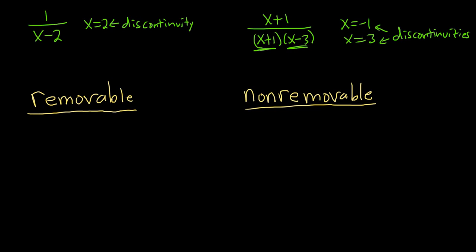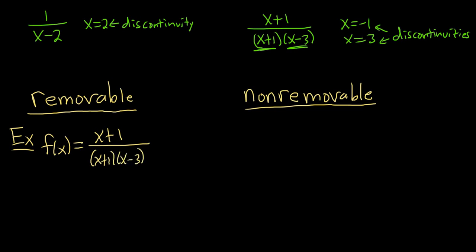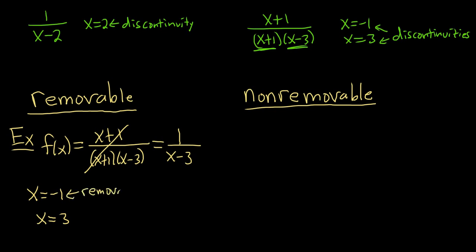A non-removable discontinuity is a discontinuity that you can't remove — you can't fix it. So if it's removable, you can remove it and fix it. Using the example f(x) = (x+1) / ((x+1)(x−3)), this function has two discontinuities: negative 1 and 3. Notice that you can cancel the (x+1) factor, which essentially removes that discontinuity. So you get 1 over (x minus 3), and that discontinuity has been removed — it's a removable discontinuity. The discontinuity at 3, however, you can't get rid of — it's non-removable.